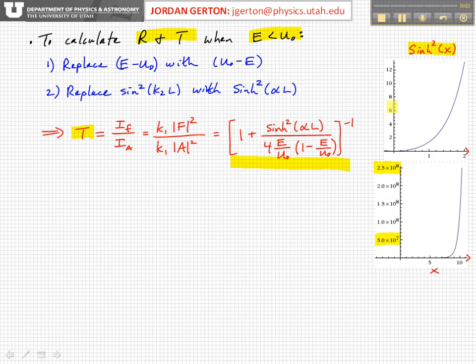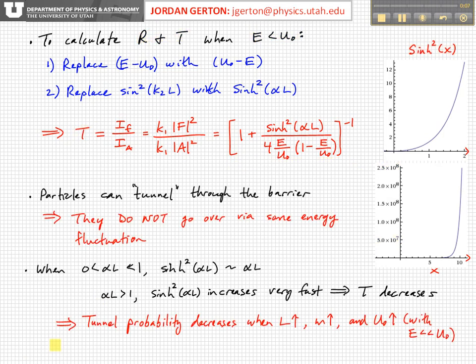That's what the hyperbolic sine function looks like. As I just said, when alpha L is between 0 and 1, then the hyperbolic sine squared of alpha L is approximately equal to alpha L. It's roughly linear in this regime. And so that can help us calculate things in that limit.